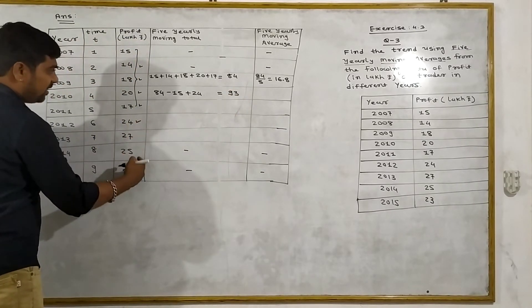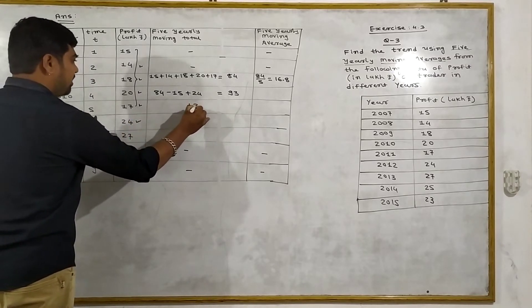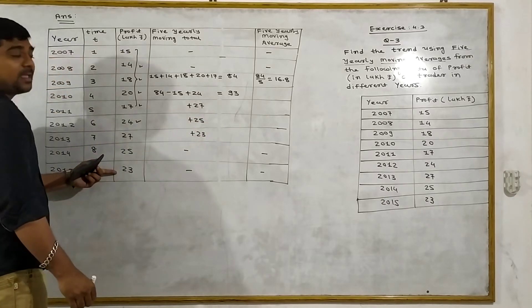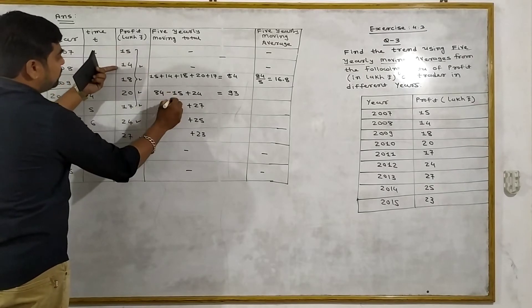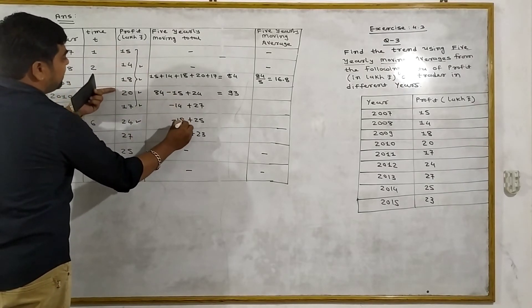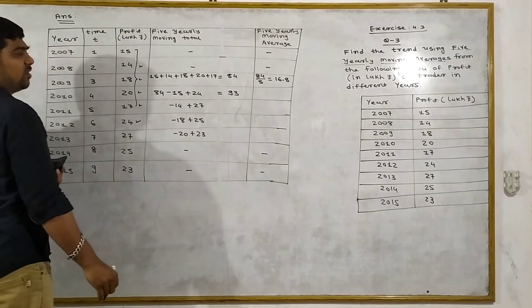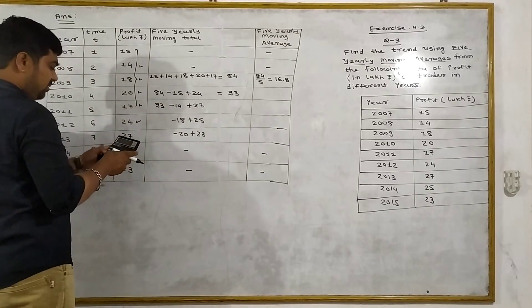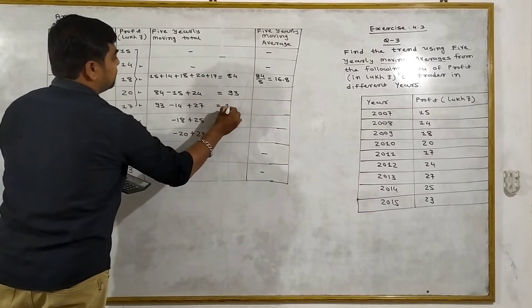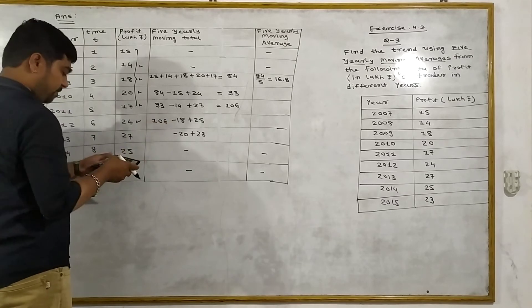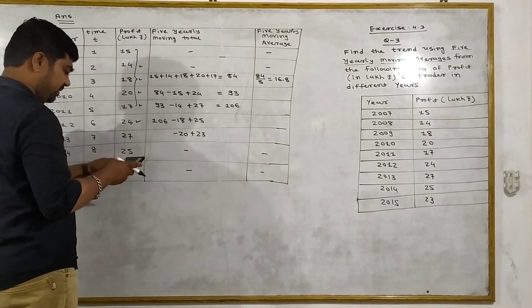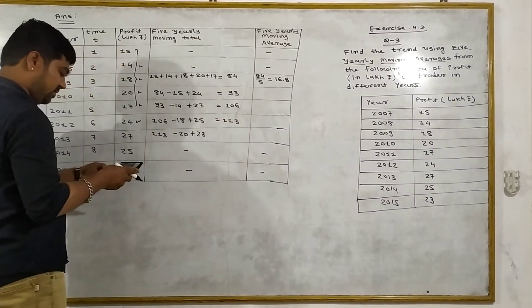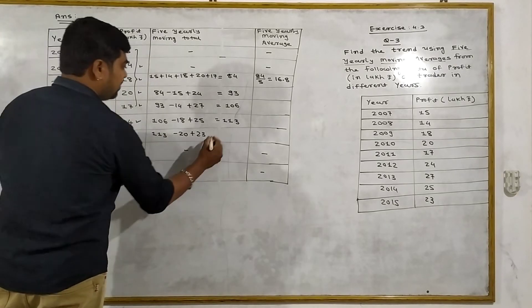Next value: add 27, subtract the first value to get 106. Then 113 minus 18 plus 25 equals 113. Then 113 minus 20 plus 23 equals 116.